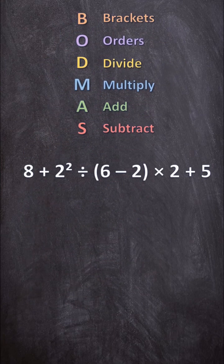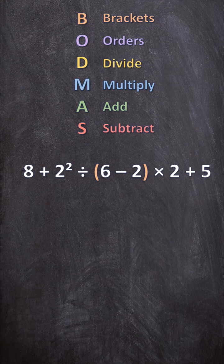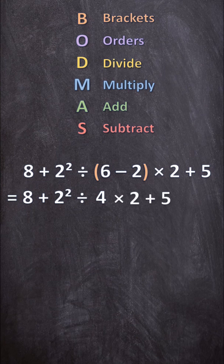So here we have a problem with a bunch of operations, so the first thing you'll do is brackets. You write down everything exactly as it is, the only thing we're changing is what's inside the brackets. So 6 minus 2 is 4 and you write down the rest of your problem.